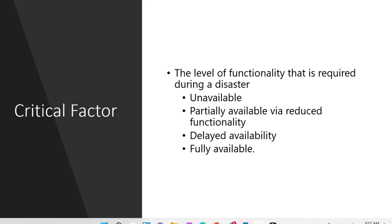We also need to consider the level of functionality required during a disaster. There are four buckets: first, we are okay if the application is simply unavailable; second, we are okay with partial availability and reduced functionality; third, we are okay with delayed availability — the primary fails but we can tolerate a delay before the secondary comes up; or fourth, we want the application fully available at all times. Based on which bucket applies, we design our disaster recovery strategy.